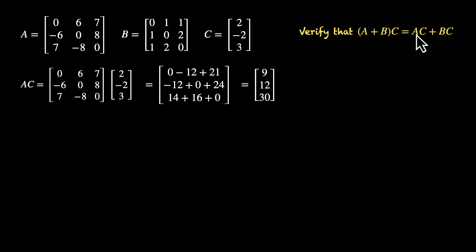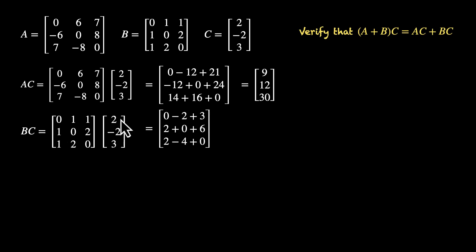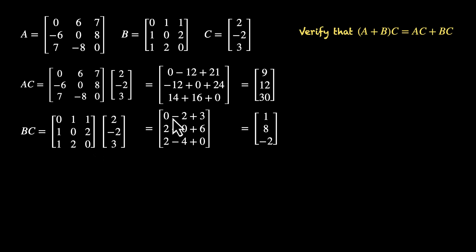Now pause the video and try finding BC on your own. Okay, let's do this together. BC: first element: 0×2 + 1×(−2) + 1×3 = 0 − 2 + 3 = 1. Second element: 1×2 + 1×(−2) + 0×3 = 2 + 0 − ... wait: 2 + 0 + 6 = 8. Third element: 2×2 + 1×(−2) + 2×3... = 2 − 4 + 0 = −2. So BC is [1, 8, −2].